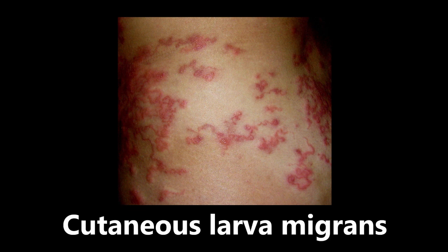Next image, we're doing a little bit of derm. This is cutaneous larva migrans, caused by Ancylostoma duodenale and Necator americanus. This is the infectious larval form that can burrow under the skin and penetrate the epidermis. It can be picked up from soil or sand with contaminated dog feces — that is how it is passed to humans. The larval form burrows into the epidermis, and you get this rash called cutaneous larva migrans.